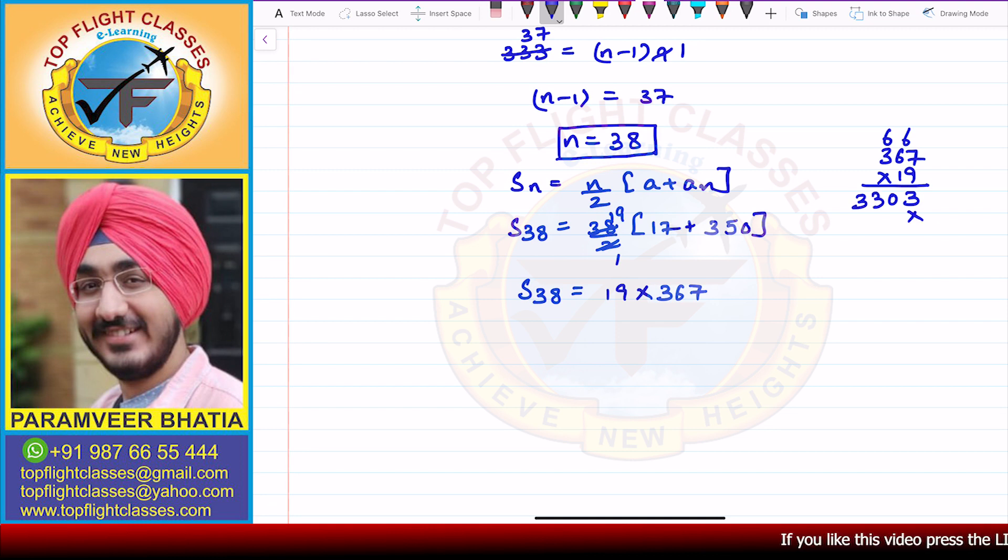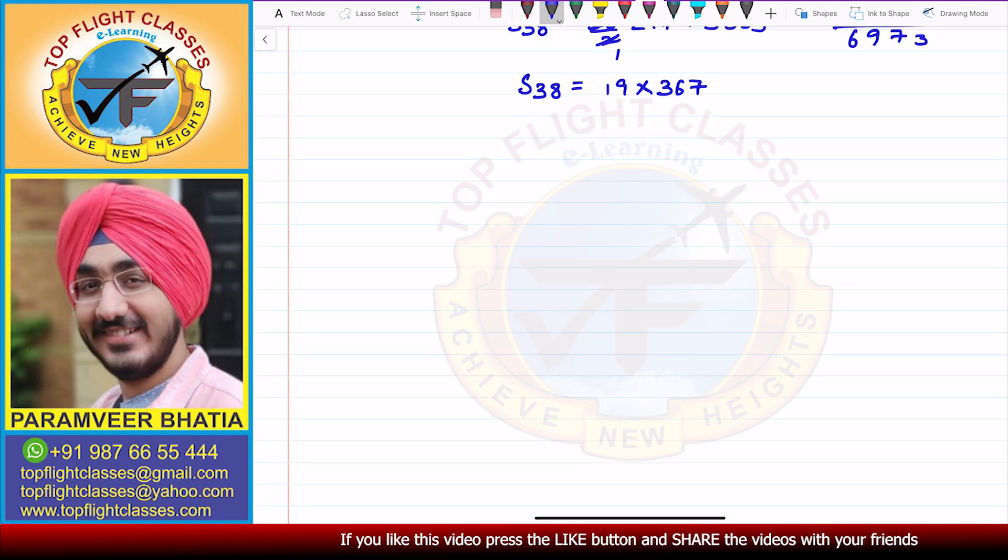Now we have over here 1 into 7 is 7, 1 into 6 is 6, and 1 into 3 is 3. So when I add them, I will get 3, 7, 9, 6.